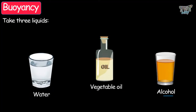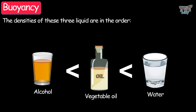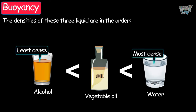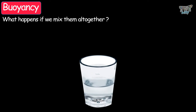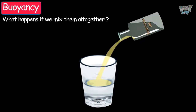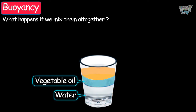Here is another interesting example. Take three liquids: water, some vegetable oil, and some alcohol. Their densities in increasing order are: alcohol has the least density, then oil, and water has the maximum density of the three. Now if we mix all of them together — take a glass of water, slowly pour some vegetable oil in it, and then pour some alcohol in the same glass — you can see three distinct layers: the most dense liquid, water, is on the bottom; oil is in the middle; and alcohol is on top because it has the least density amongst the three liquids.